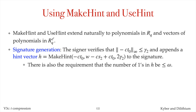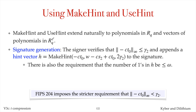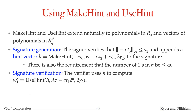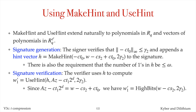To accommodate compression of t, the signer verifies that the infinity norm of minus ct0 is at most gamma2, and then appends the hint vector h to the signature. The hint vector is Make Hint of (minus ct0, w minus cs2 plus ct0, 2*gamma2). The hint vector allows the verifier to compute the 2*gamma2 high bits of w minus cs2 by first computing Az minus ct1 times 2 to the d, and then applying the Use Hint function. Since Az minus ct1 times 2 to the d equals w minus cs2 plus ct0, w1 prime is equal to the 2*gamma2 high bits of w minus cs2, as desired.